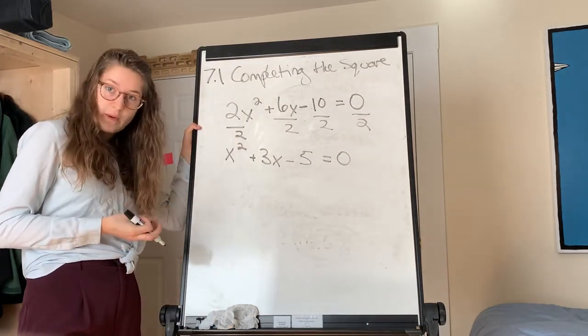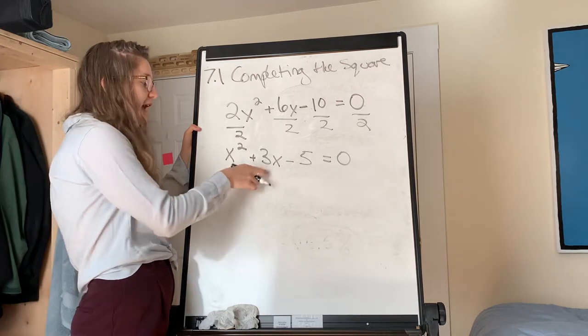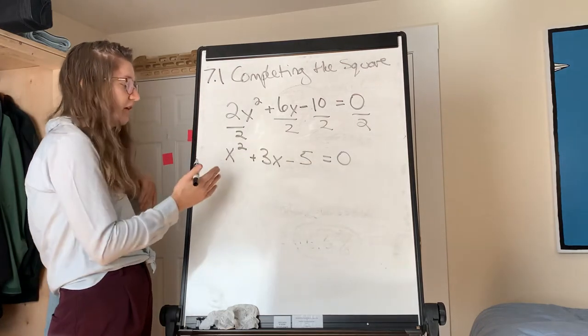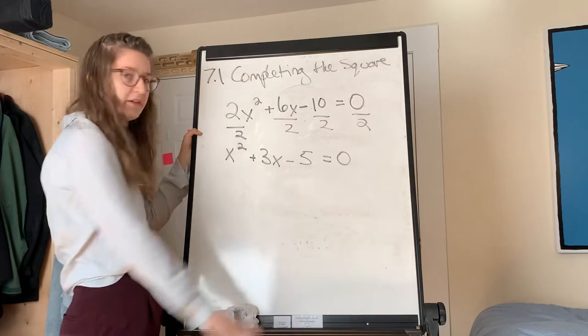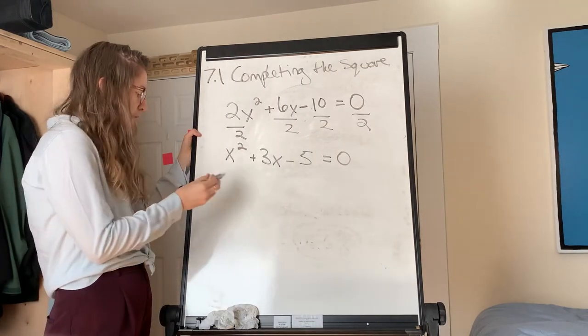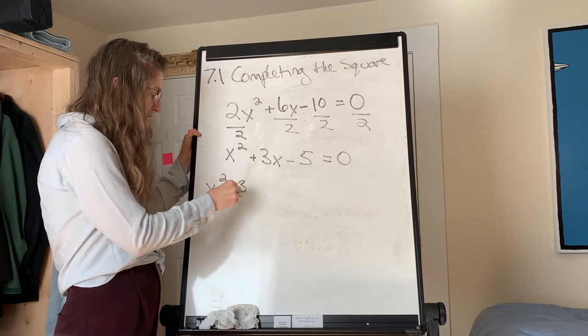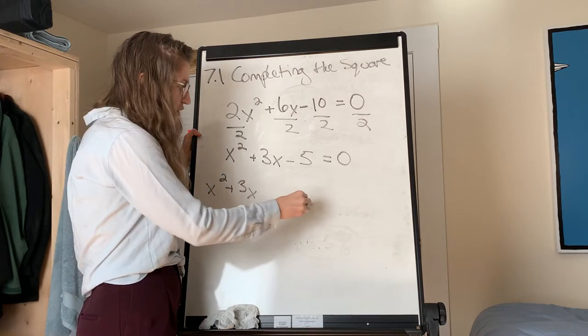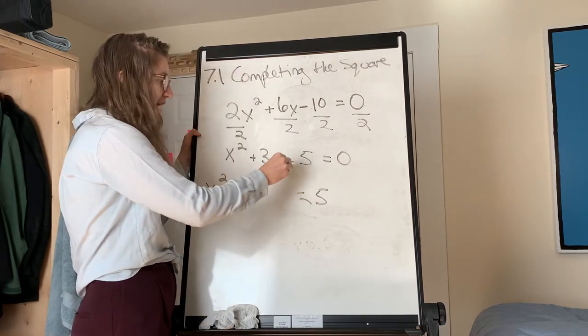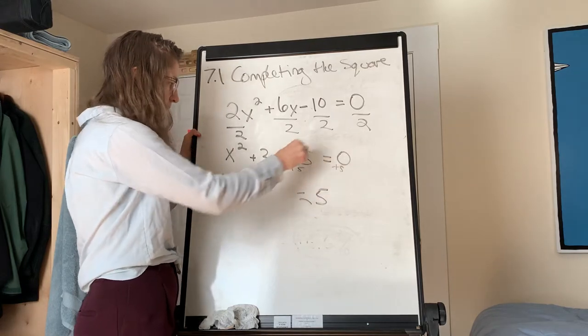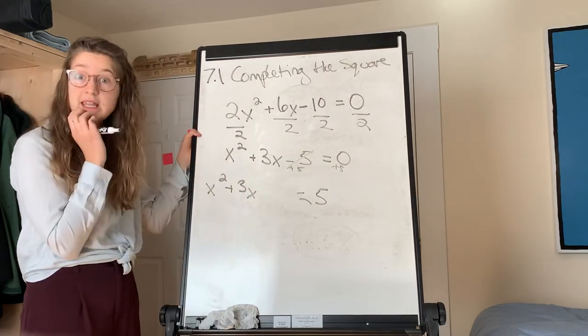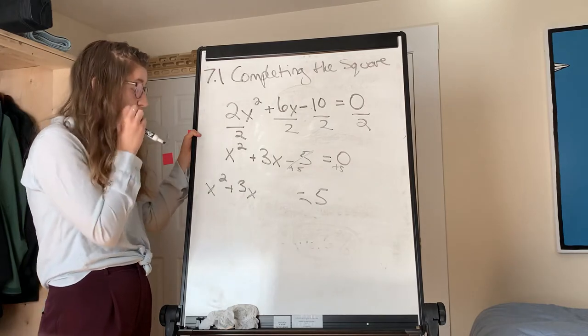What I like to do when I'm completing the square, and you don't have to do this, is to get the x terms on their own side and the constant term on the other side, so you don't have to worry about it. So I'm going to rewrite this as x squared plus 3x is equal to 5, because I've added 5 to both sides. I've also left this space here because I'm going to need that space for when I actually complete the square.